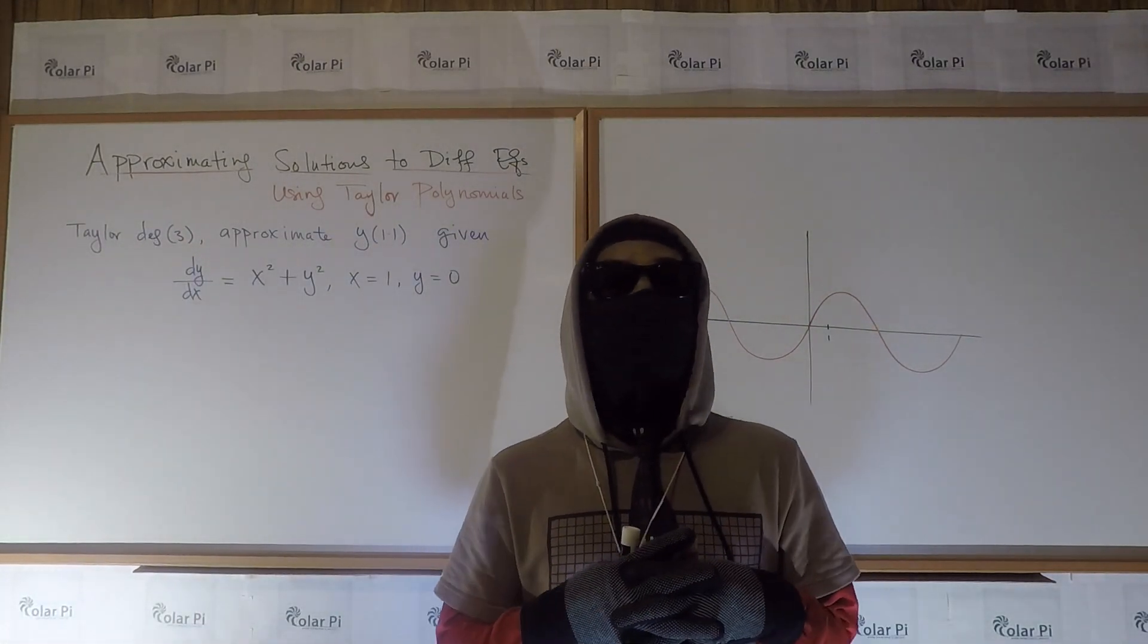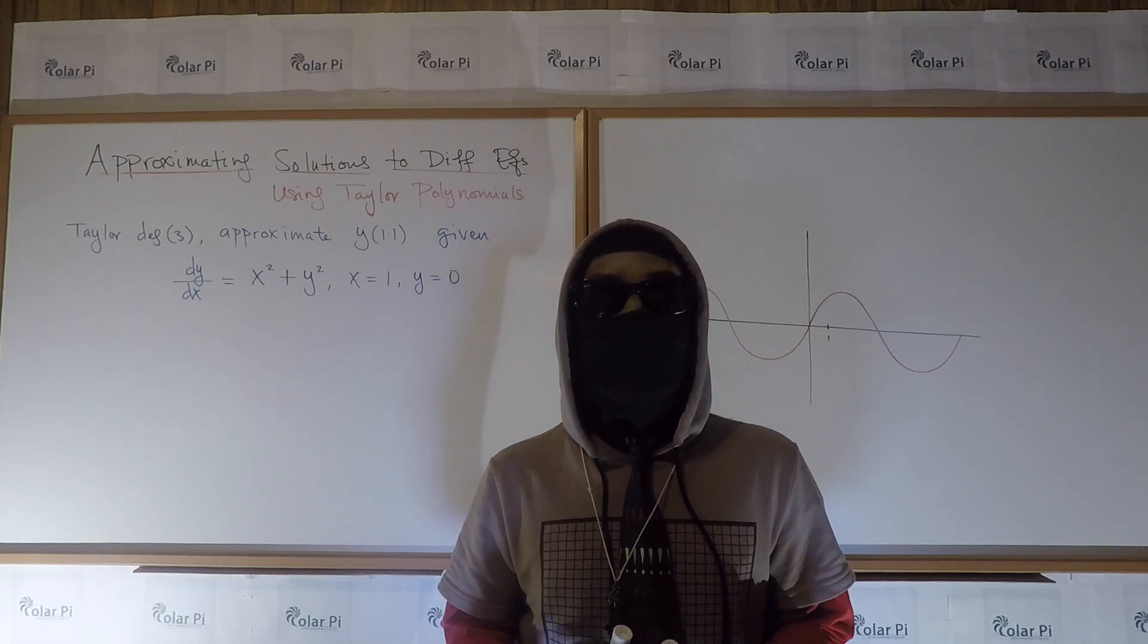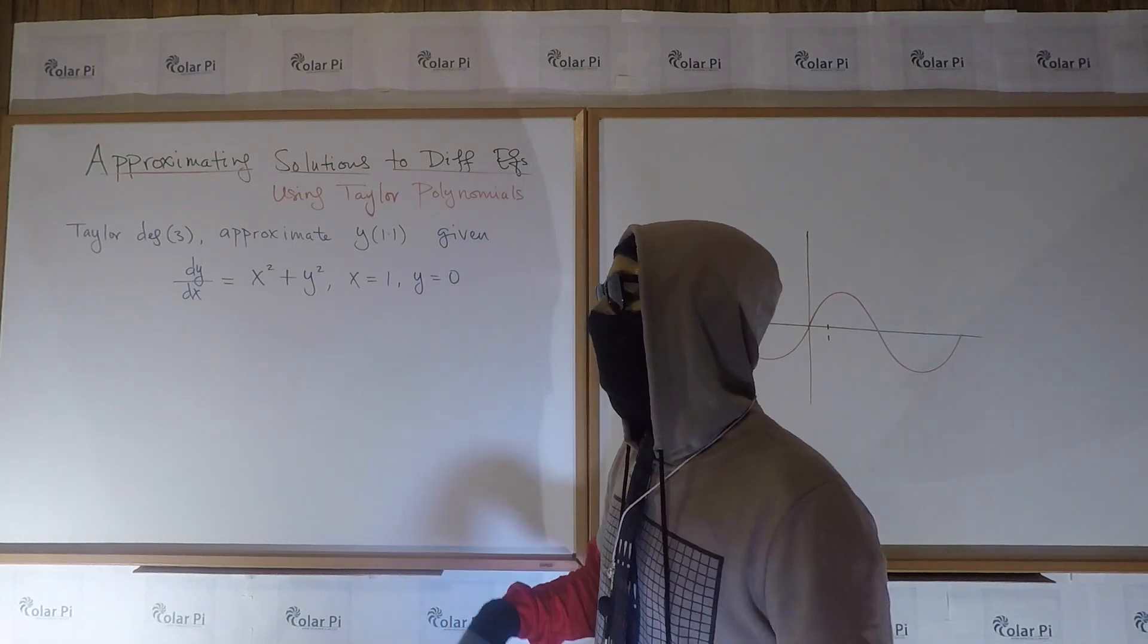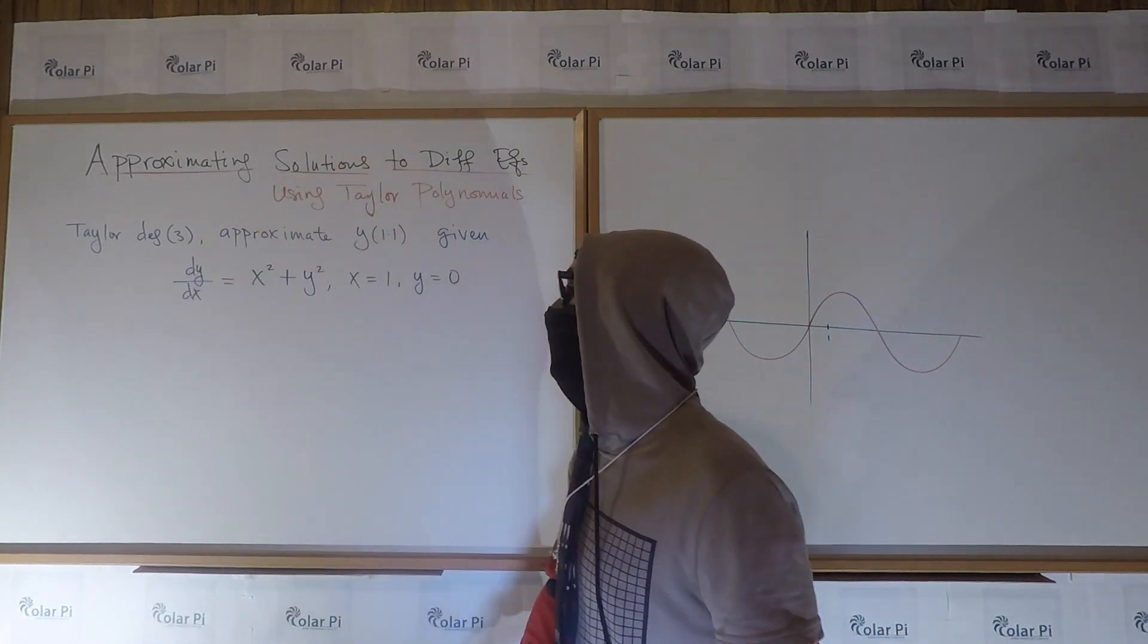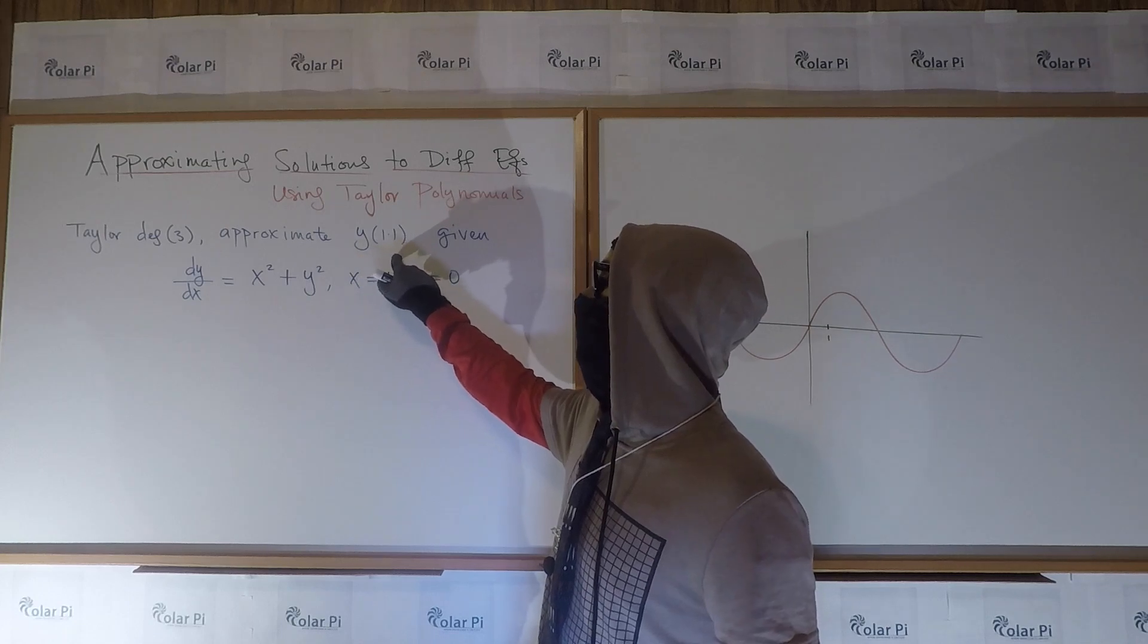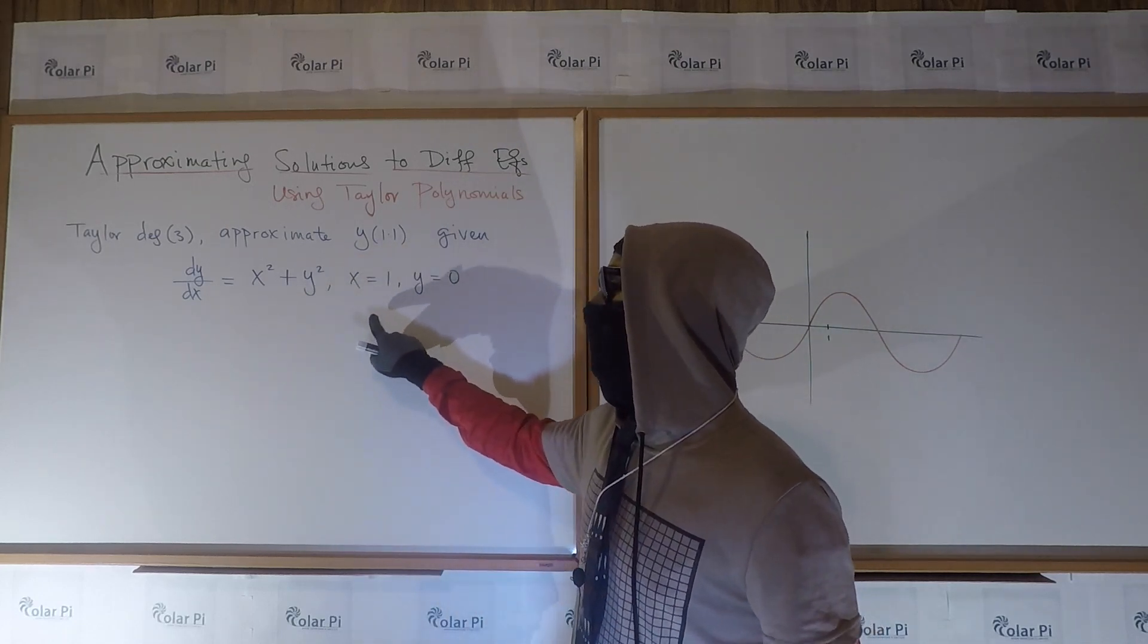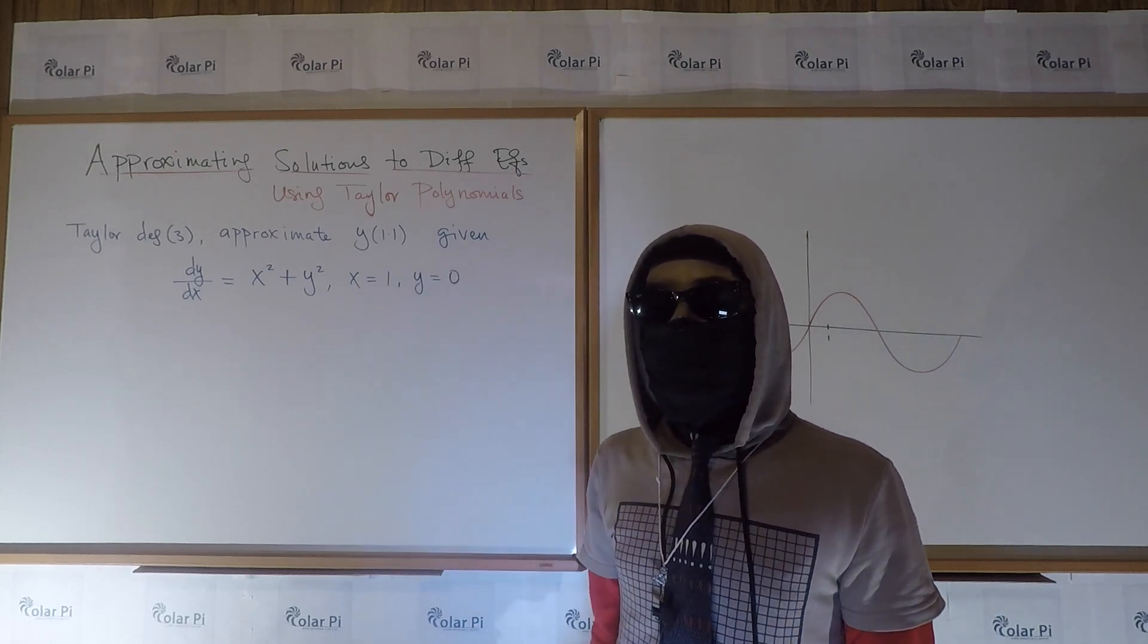Hey guys, welcome. So in this video, I'm going to show you how to use a Taylor polynomial of a particular degree to estimate the solution to a given differential equation. In this specific example, we're going to use a Taylor polynomial of degree 3 to approximate y of 1.1, given this differential equation, and knowing the initial condition that when x is 1, y is equal to 0.